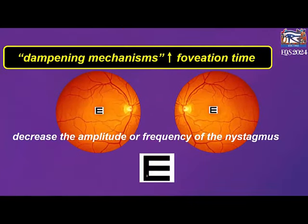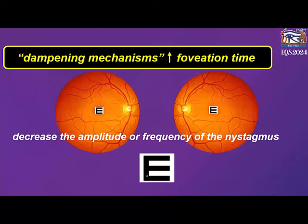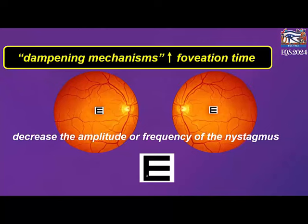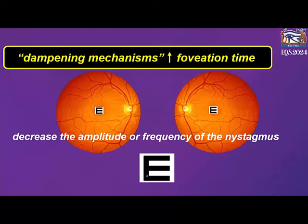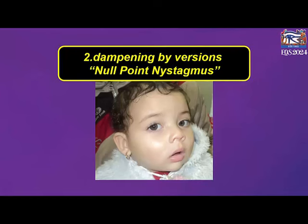Some patients have damping mechanisms for their nystagmus. This will decrease the amplitude or frequency of the nystagmus, increasing the foveation or recognition time and improving visual acuity. Damping of nystagmus can be done with two mechanisms: first, damping by convergence, or what is called nystagmus blockage syndrome; second, damping by versions, or what is called null point nystagmus.